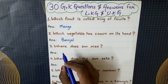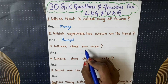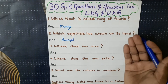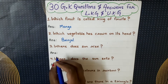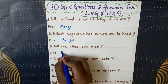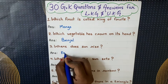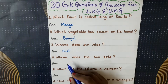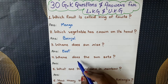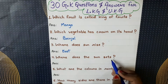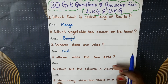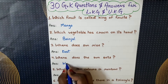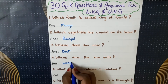Next question: where does the sun rise? Sun yaani suraj kahan se ukhta hai? The answer is east. Next question: where does the sun set? Suraj kahan pe dubta hai? The answer is west.